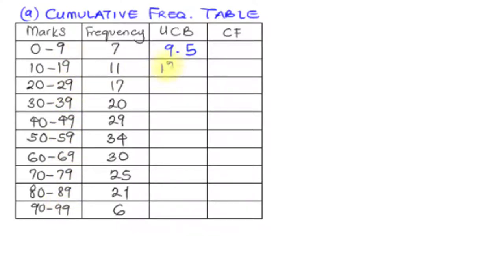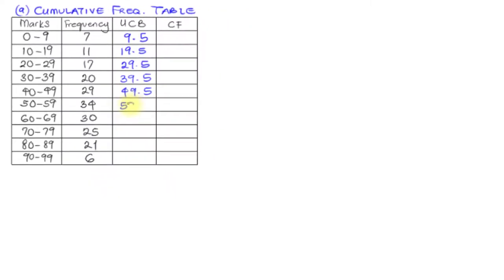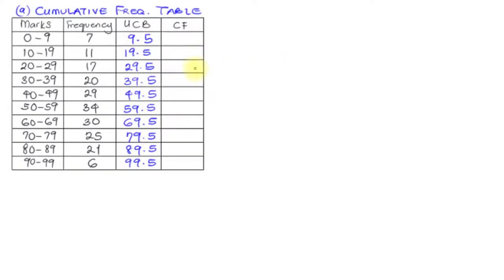So we have 19.5, then 29.5, 39.5, and on like that. Let me just fill this up. This is the set of values for the upper class boundary. You don't need the lower class boundary — you just need the upper class boundary to compute the cumulative frequency table and use it subsequently in the cumulative frequency graph.